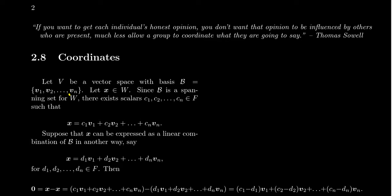That should be a V right there. Sorry about the typo. There are scalars C1, C2 up to Cn that belong to the field such that X can be written as a linear combination of those vectors in the basis with those scalars. So X equals C1 V1 plus C2 V2, all the way up to Cn Vn. That's what it means to be a spanning set.